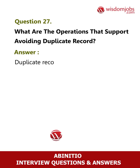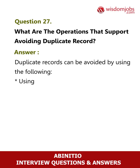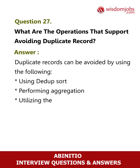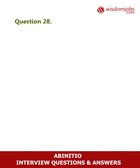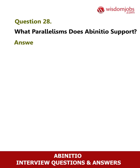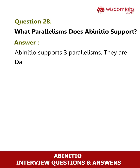Question 27: What are the operations that support avoiding duplicate records? Answer: Duplicate records can be avoided by using the following: using dedup sort, performing aggregation, or utilizing the rollup component.